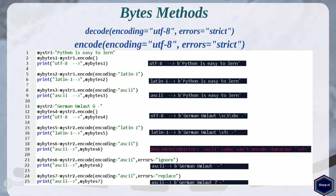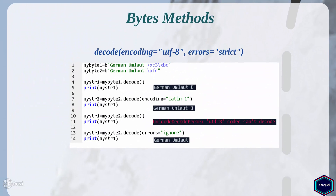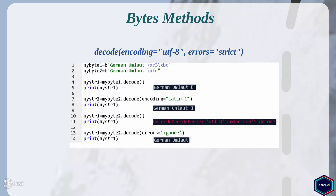If I want to convert my bytes object back to a string object, I can use the decode method. The decode method is the reverse of encode method and converts a bytes object into a string object. Just like encode method, decode method also takes two arguments: encoding and errors. In this example, mybyte1 is encoded in UTF-8 and mybyte2 is encoded in Latin-1. When I call decode method with the correct encoding arguments I get string objects as a result. But if I try to decode mybyte2 using UTF-8, the Python interpreter throws an exception. To avoid such exceptions, I can set the errors argument to ignore. The errors argument of decode method works exactly like the errors argument of encode method. For all valid encoding and errors arguments, please read the Python documentation.